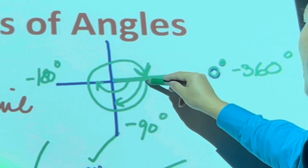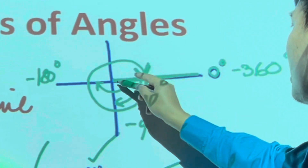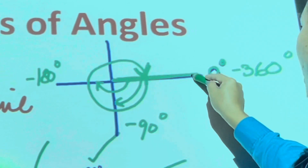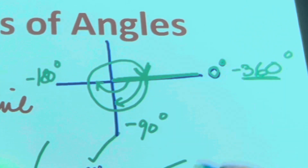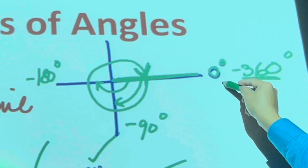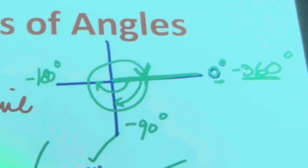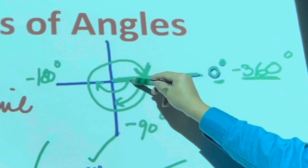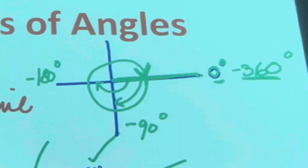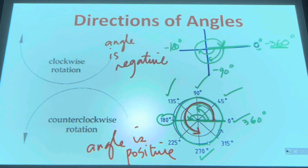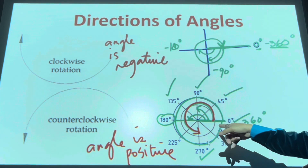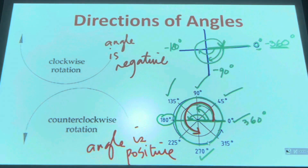If an angle is 360 degrees — one full circle — the terminal side stops in the same place as zero degrees. Negative 360 degrees also terminates at this side. So there are angles that have the same terminal side. If an angle is negative, rotate clockwise; if positive, rotate counterclockwise.